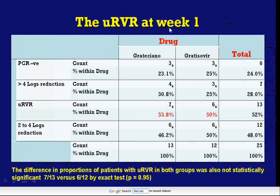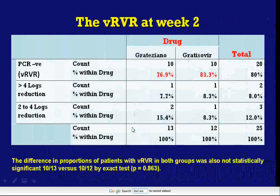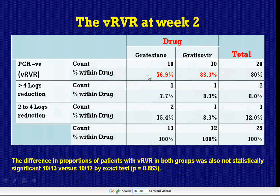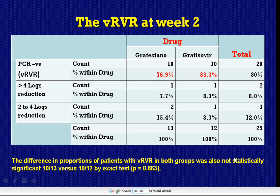Regarding the ultra-rapid virologic response at week one, the rate was approximately 50% and 53.8% in both groups, with no statistically significant difference between them. The very rapid virologic response rate at week two was approximately 83% in Gratisovir and 76.9% in Gratisiano, also with no statistically significant difference between both groups by the Fisher exact test.